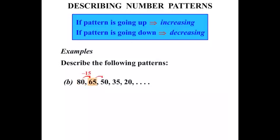From 65 down to 50, again subtract 15. From 50 to 35 we subtract 15. From 35 to 20 we subtract 15. So there is a constant pattern. Because the pattern is going down by 15, we say the pattern is decreasing by 15.